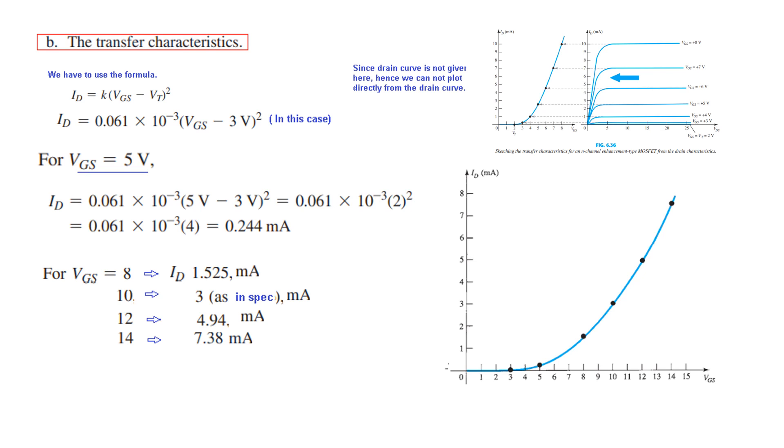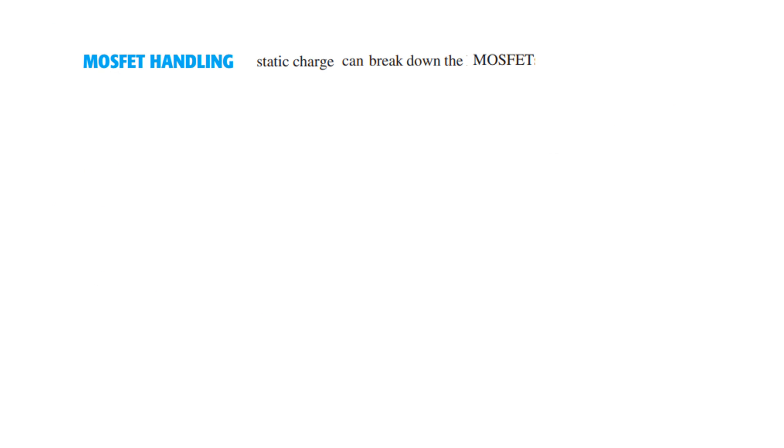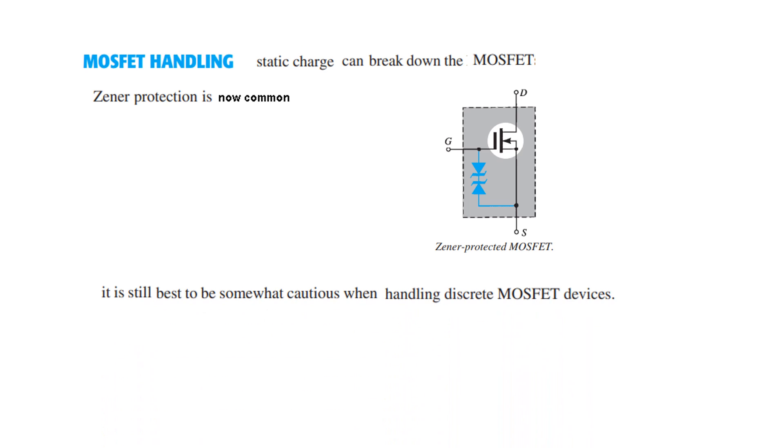One caution here: MOSFET handling. The static charge can break down the MOSFET, so the insulation layers break down by static charge. So you have to be very careful in handling, although an effort has been made to protect by using Zener diode protection in the built-in MOSFET. But still it is best to be very careful in handling, and it is better that while you are handling this, you discharge yourself by touching some metal parts which is linked with the ground. Not just touching the key. I have seen one professor who was just touching the key, so that will not discharge. It has to be linked with the ground or the ground level. Thank you so much for watching.